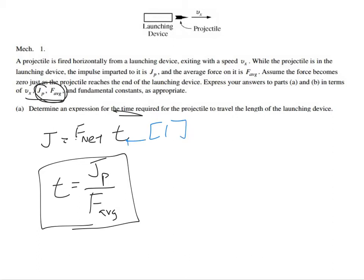Moving things around, you end up getting J_p divided by F_avg. Easiest two points ever - one point for the equation, one point for the answer.